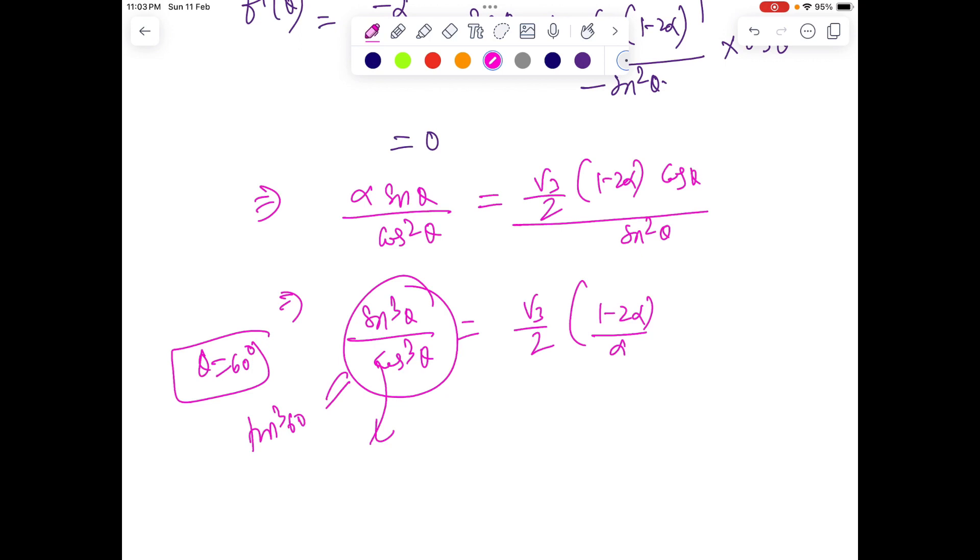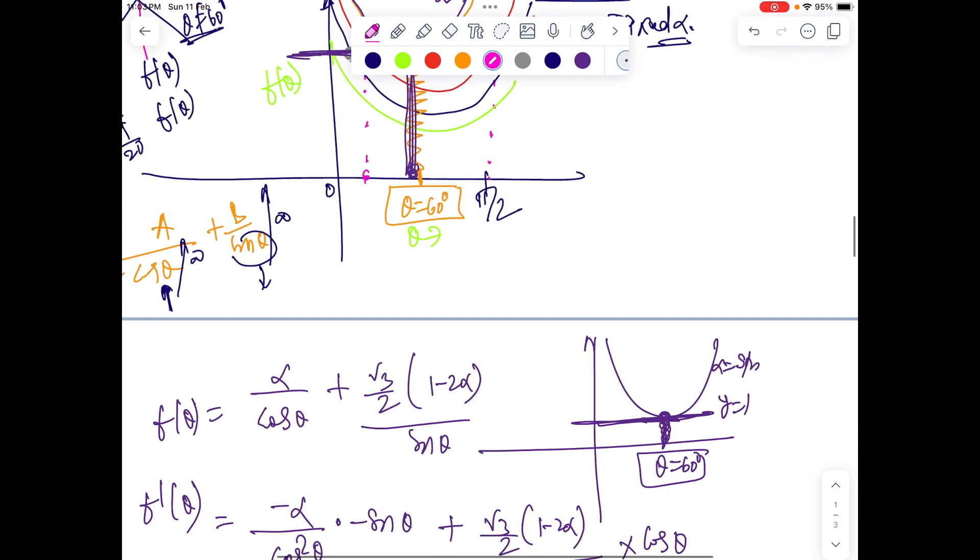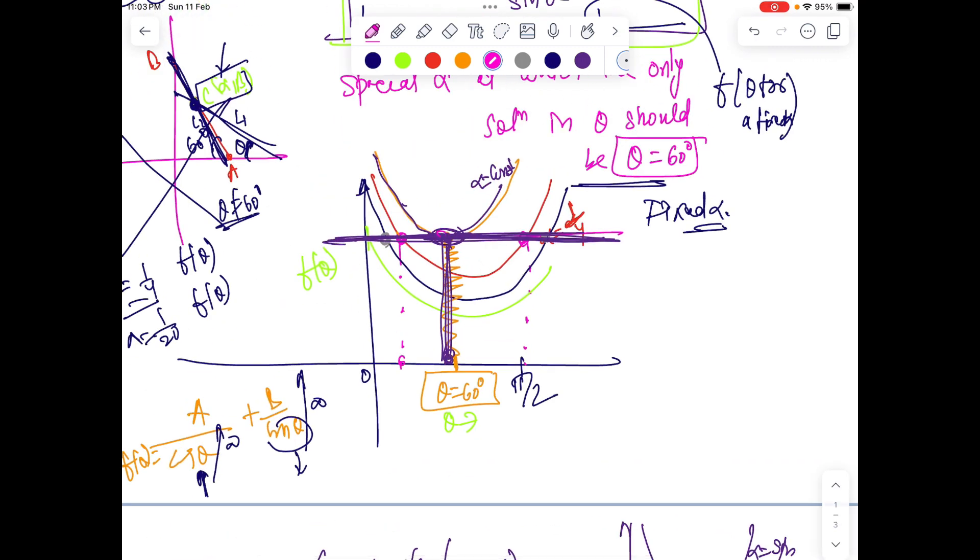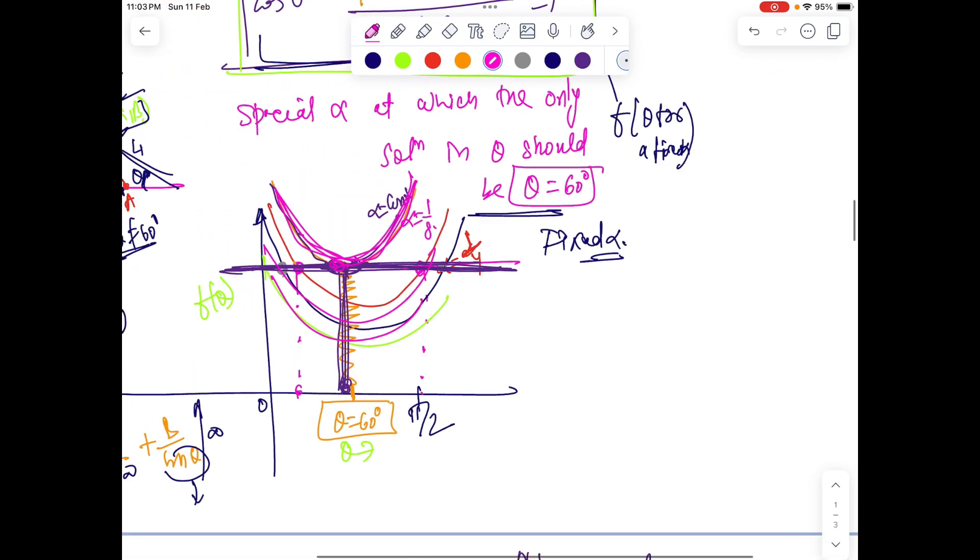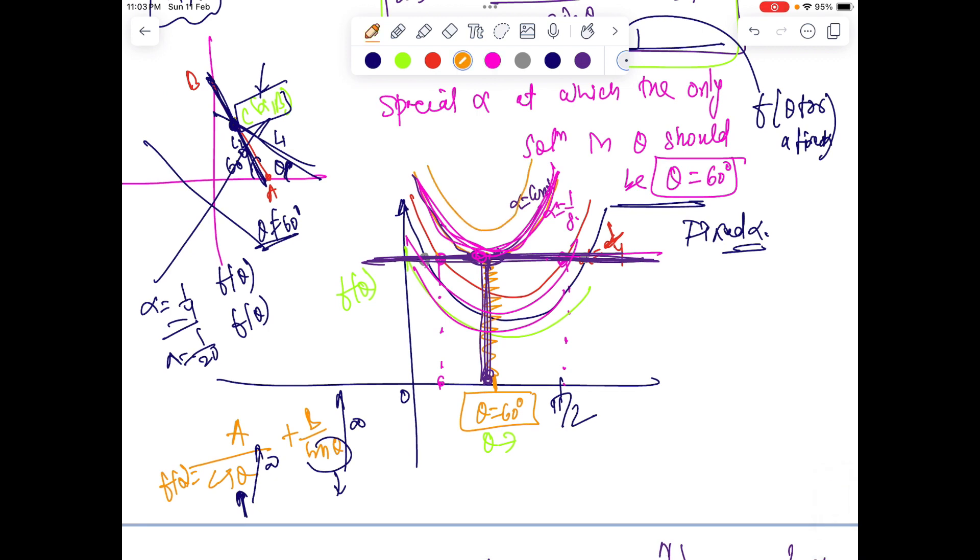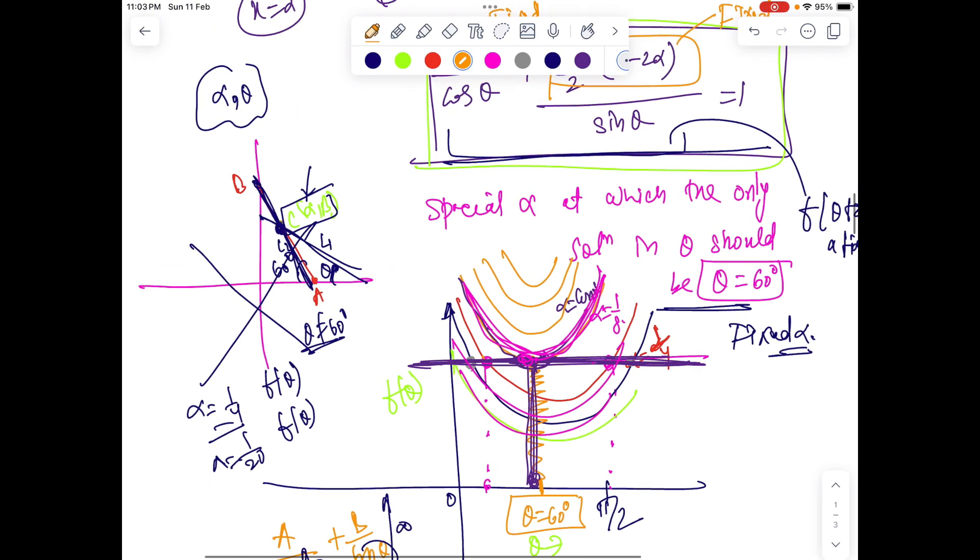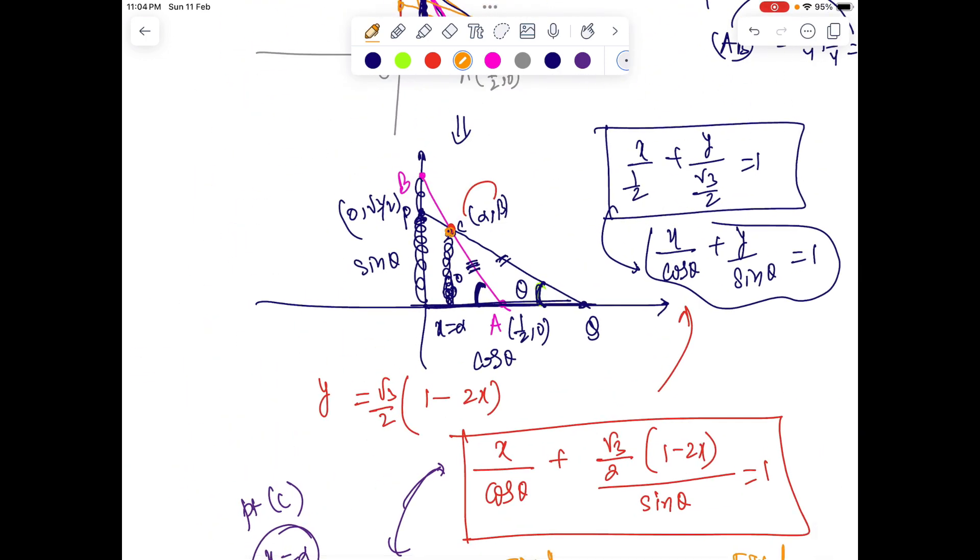Since the minimum is achieved at theta equal to 60, this is tan cubed 60, which is 3 root 3, equals root 3 over 2 times 1 over alpha minus 2. Canceling, we have 6 equals 1 over alpha minus 2, so alpha equals one-eighth. When alpha is one-eighth, that is a special location at which the minimum will be achieved. This curve represents alpha equals one-eighth and will have only one point of intersection. For any other alpha, we'll have more points of intersection. Some might wonder what happens if you further increase alpha. But the x coordinate must be between 0 and one-half, because alpha must belong to 0 to one-half.